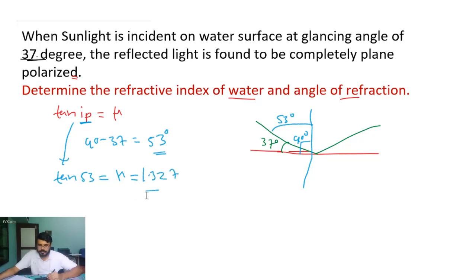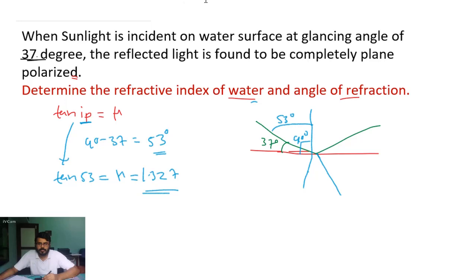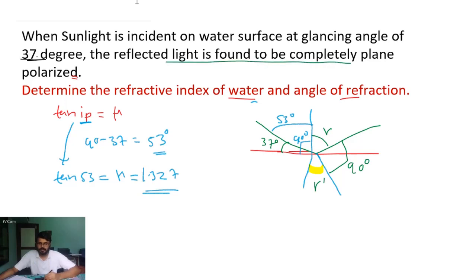Part one is complete. Now for the angle of refraction: when light is incident, part of it gets refracted. The refracted ray makes angle r with the normal, and the reflected ray makes angle r prime. This angle between refracted and reflected light is 90 degrees because the reflected light is found to be completely plane polarized — the refracted and reflected rays are perpendicular.